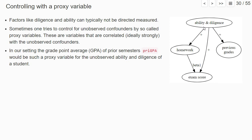For example, in our setting, we could use the previous grades—the grade point average of prior semesters for which we have data—as a proxy variable for unobserved confounders that can affect the exam score and homework.